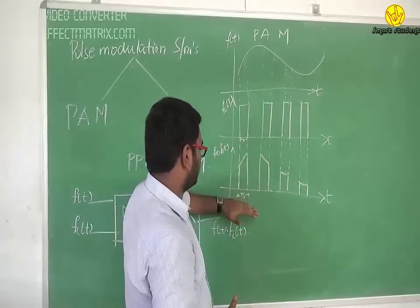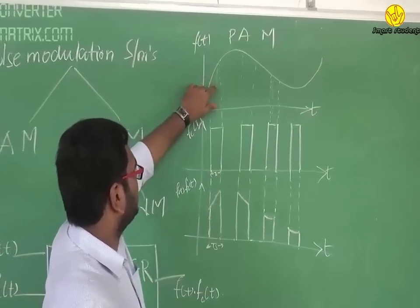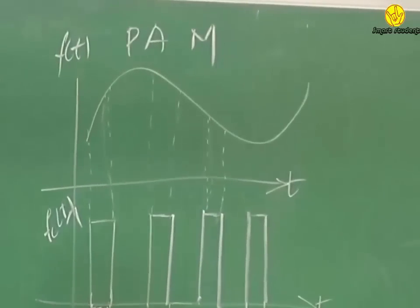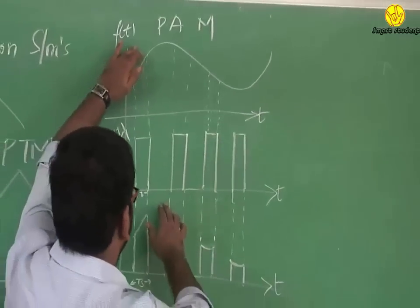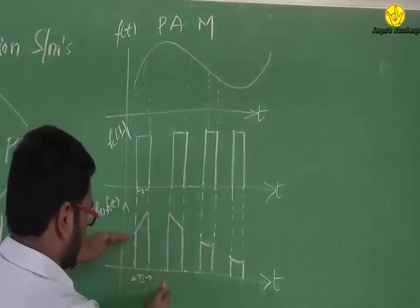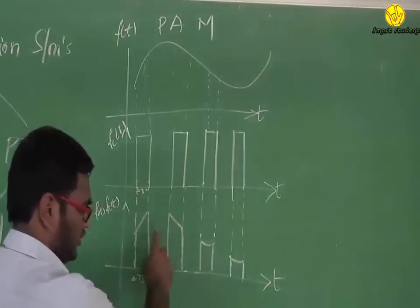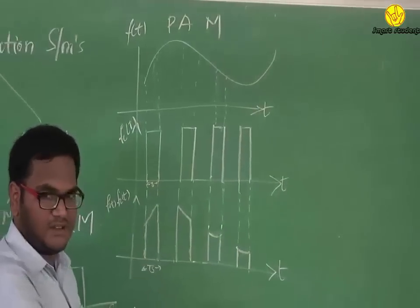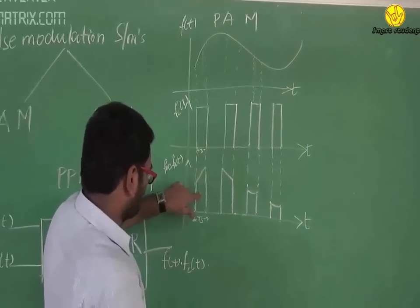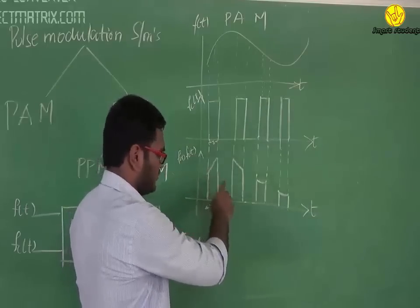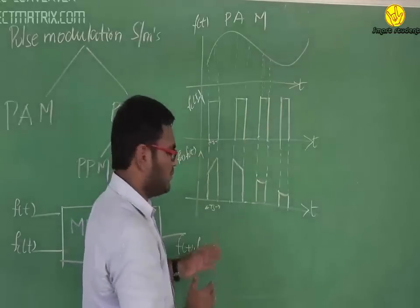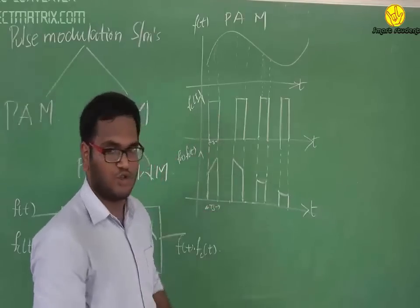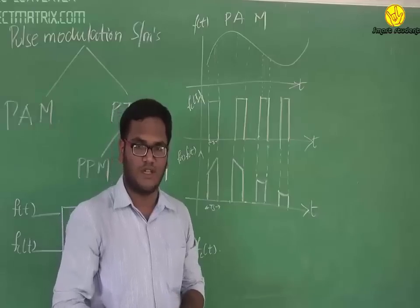As we can see from the graphical representation, this is f(t), the baseband signal, and this is the carrier signal — the series of pulse trains fc(t). The multiplication of these two signals gives us the pulse amplitude modulation signal. Although the PAM signal follows the same sampling time period ts, the instantaneous amplitude of each pulse is continuously varying, which makes it very difficult to retrieve the baseband signal after demodulation. To overcome this disadvantage, we go for flat top sampling.